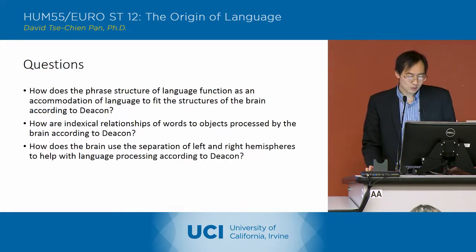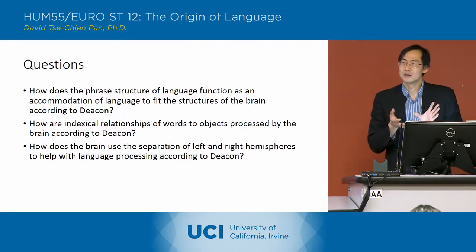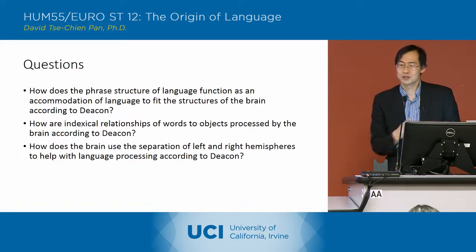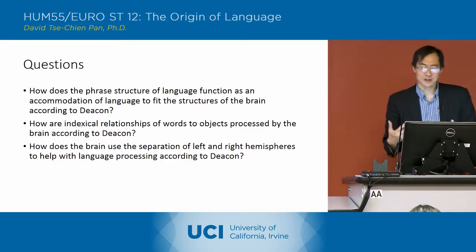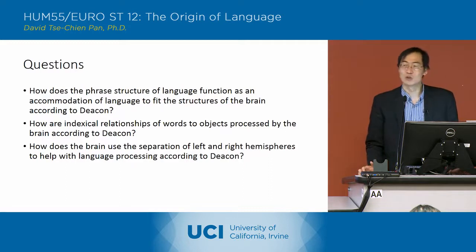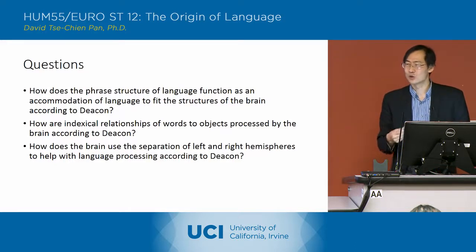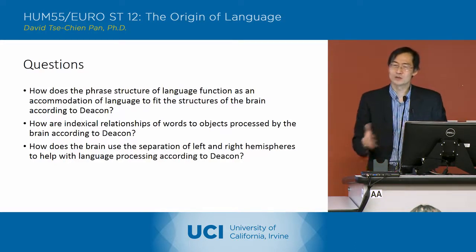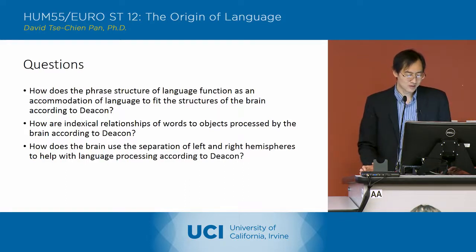How are indexical relationships of words to objects processed by the brain, according to Deacon? He talks about how linkages between sound processing and multimodal processes — sound processing versus vision processing, vision processing versus tactile processing — are the ones that set up indexical relationships of words to objects. He also talks about how grammatical function words like 'which' or 'that,' which separate off different phrases in a sentence, are important for setting up these indexical correlations between different parts of sentences, and that helps the brain.